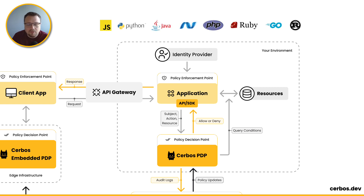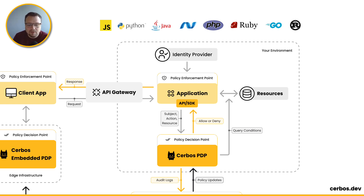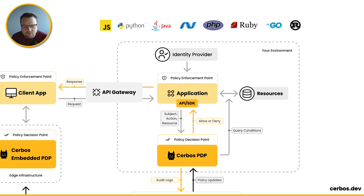Inside your application, rather than hard-coding authorization logic like "if user is admin, allow," you integrate SERBOS calls via our APIs or SDKs — we have SDKs for most languages. Your application then makes a call to a locally deployed policy decision point inside your environment: a sidecar in Kubernetes, another service in your cluster, a Lambda function, or a binary running alongside your VM. That API call passes to SERBOS the subject, the action, and the resource, and the request goes to your policy decision point.